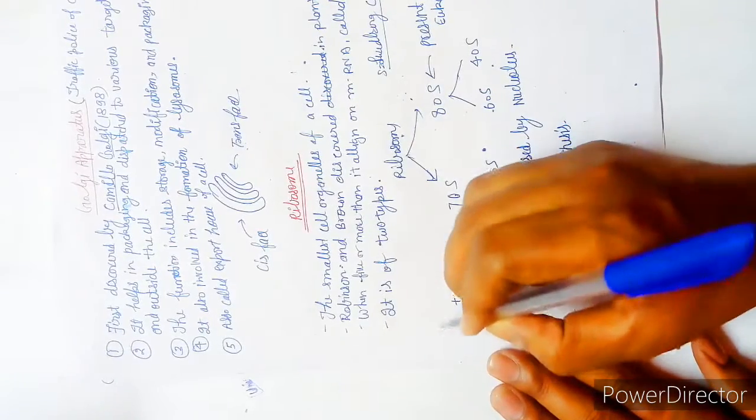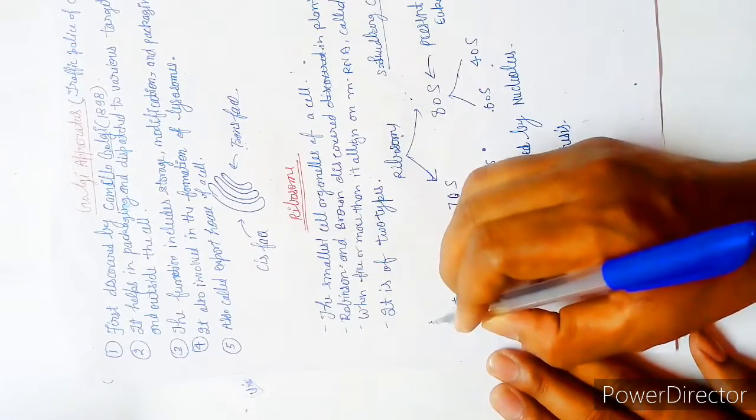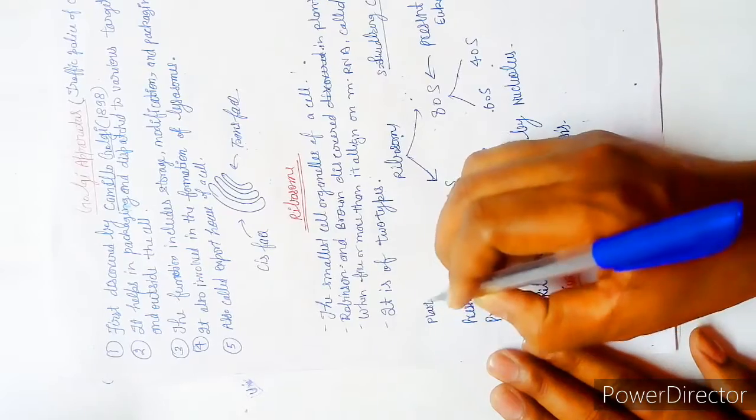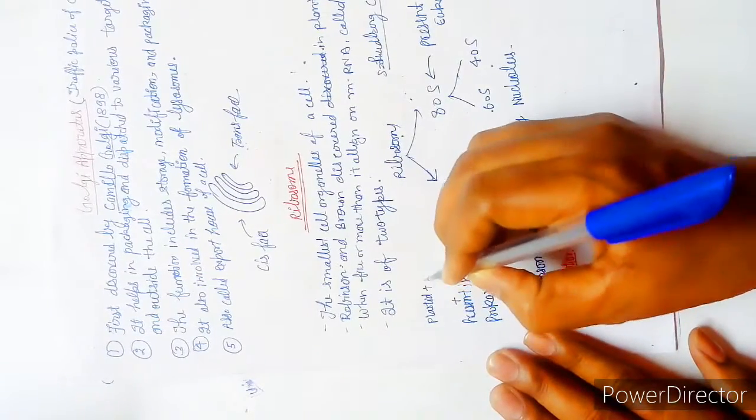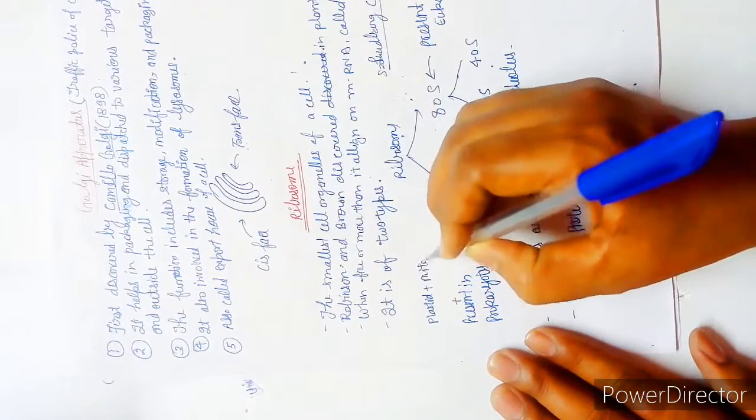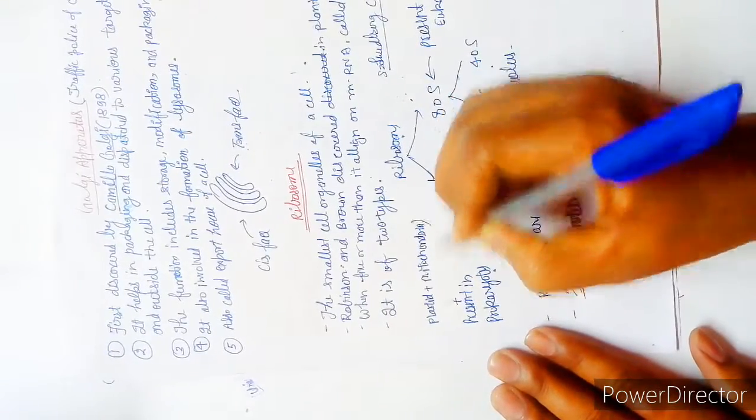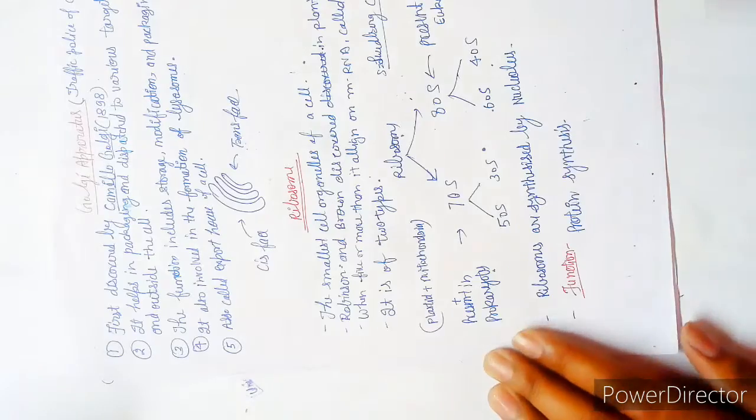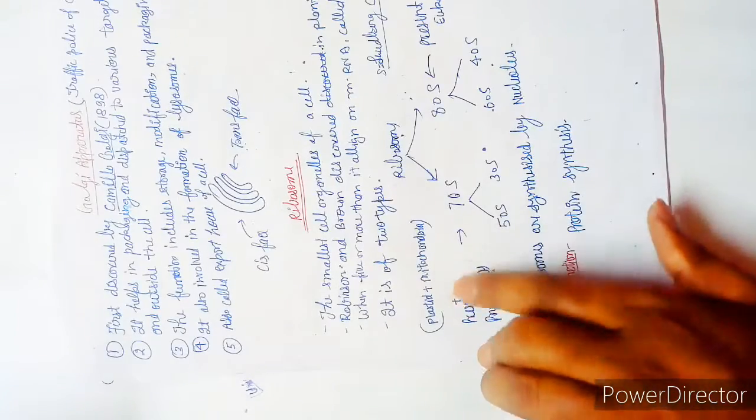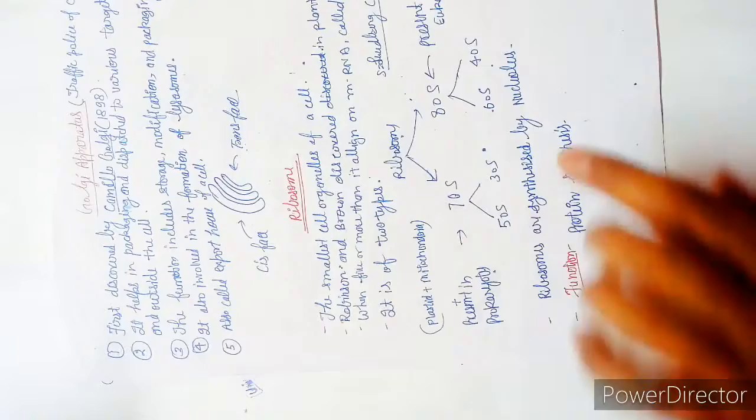70S is present in prokaryotes plus two more things: plastids plus mitochondria.